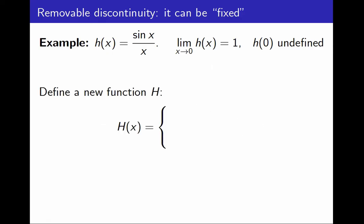What does this mean? I am going to define a new function called big H. Big H is exactly the same as the original function when x is not 0. But in addition, I am going to define big H(0) to be 1. And when I do this, big H becomes continuous at 0.